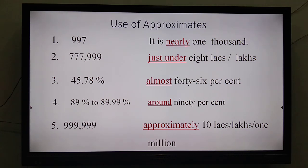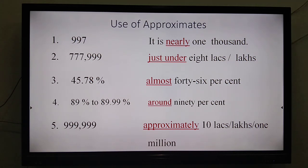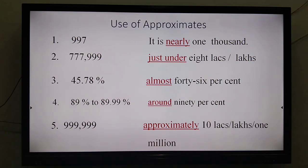These are called approximates. The last number we have is 9,99,999. Instead of saying it in this way, we can simply say 'approximately 10 lakhs' — or you can also say '1 million.' Both 'lakhs' (L-A-K-H-S) and 'million' are correct.